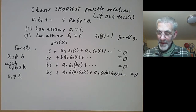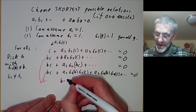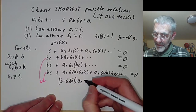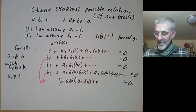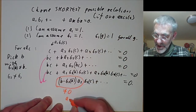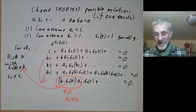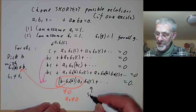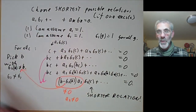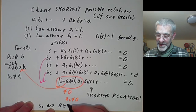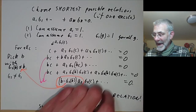Subtracting these two relations, the bc terms cancel and we find (b − sigma_2(b))·a_2·sigma_2(c) + various other terms = 0. This is a shorter relation because a_2 ≠ 0 (shortest relation assumption) and b − sigma_2(b) ≠ 0 (since sigma_2 ≠ 1). This contradicts our assumption that we had chosen the shortest relation. So no linear relation exists; in other words, characters are linearly independent.